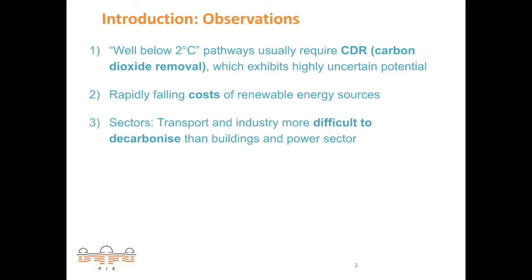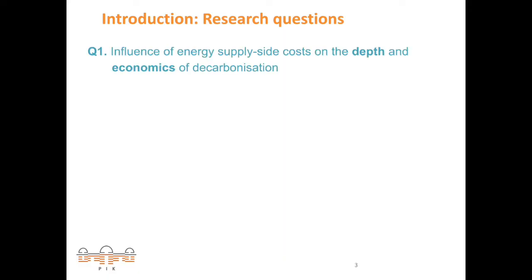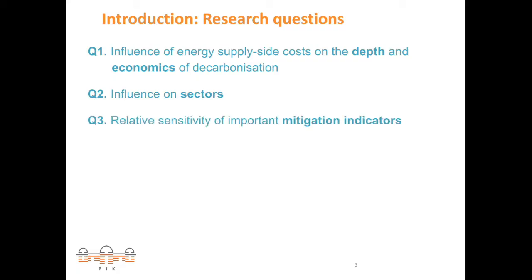Despite that, in terms of sectors, transport and industry are more difficult to decarbonize than buildings and the power sector. Summarizing these observations, we have the following research questions: we want to see what the influences of energy supply-side costs are on the depth and economics of decarbonization, broken down in economic sectors like buildings, industry, transport, and the power sector. We also want to measure the relative sensitivity of important mitigation indicators on these technology costs.